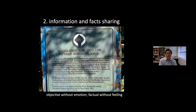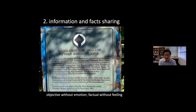The second stage of the ladder is about information and facts sharing. This is often associated with the idea of presenting official heritage descriptions developed by experts. We often see a chronological structure of narrative displayed on the main boards of heritage sites. It contains important information such as years and numbers, but is objective without emotion, factual without feelings. I often wonder how much information people can actually remember after their visit.